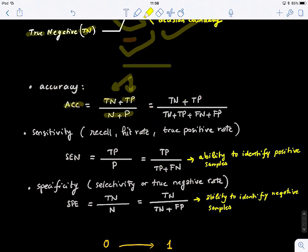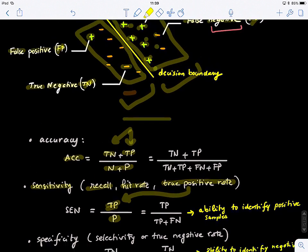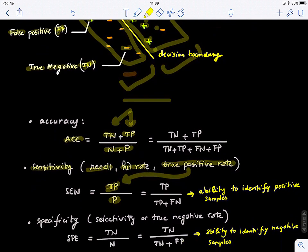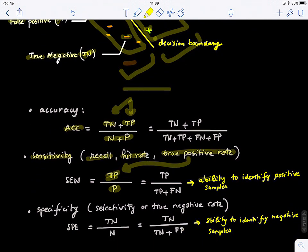And then we define another measure called sensitivity. So it's also called the recall measure, hit rate, or true positive rate, because we're defining the number of true positive samples, the correctly positive classified samples by all number of samples lying on the positive side of the hyperplane. So this basically evaluates the ability of the classifier to identify only positive samples.